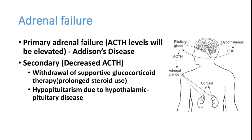Secondary adrenal failure is commonly seen with withdrawal of chronic steroid use. When a patient on long-term steroids has their hypothalamic-pituitary-adrenal axis suppressed and steroids are suddenly withdrawn, they can develop all symptoms of adrenal failure. Hypopituitarism — due to hypothalamic or pituitary failure — is another cause, producing reduced ACTH and therefore reduced cortisol. To summarize: primary adrenal failure shows elevated ACTH; secondary shows decreased ACTH.